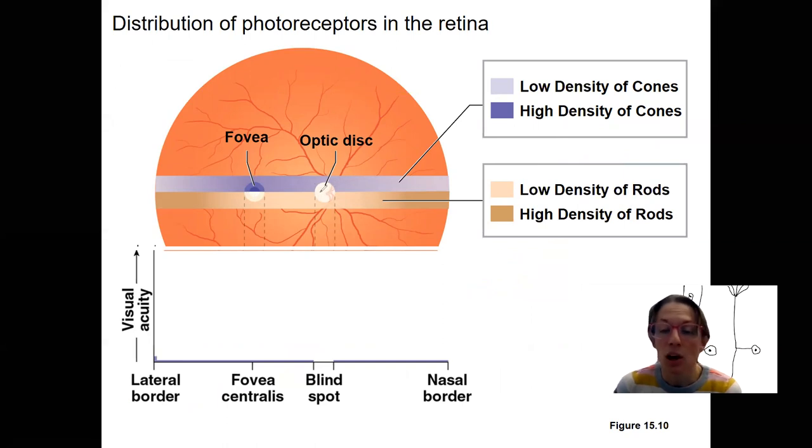Optic disc is right here. What this is adding in here is the density of rods and cones across the retina, so the distribution of photoreceptors. I've told you this verbally, but this is a nice way to visualize it. So for cones, we've got a high density right here in the fovea, and then it kind of peters out as we go away from that central.